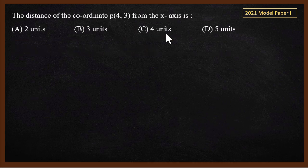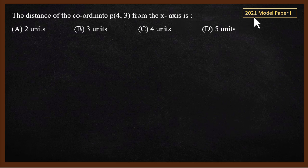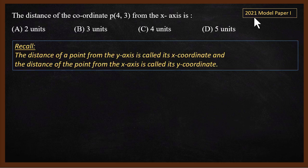The second question is about the distance of a coordinate. The coordinate is P(4, 3) and we need to find the distance of that point from the x-axis. The distance of a point from the y-axis is called the x-coordinate.